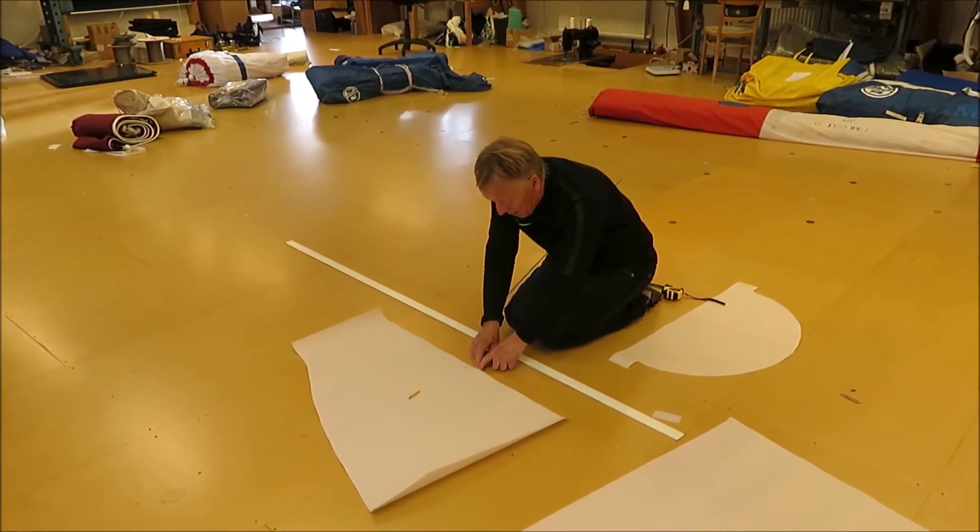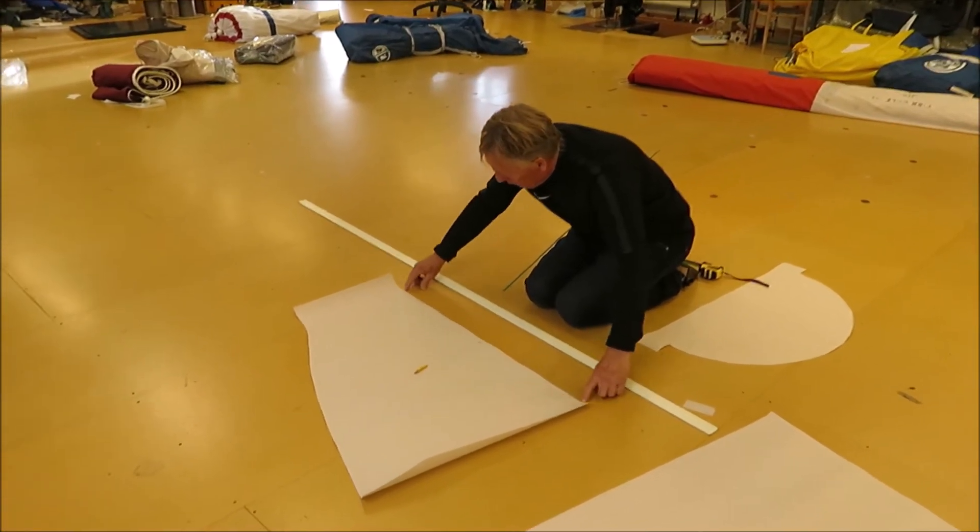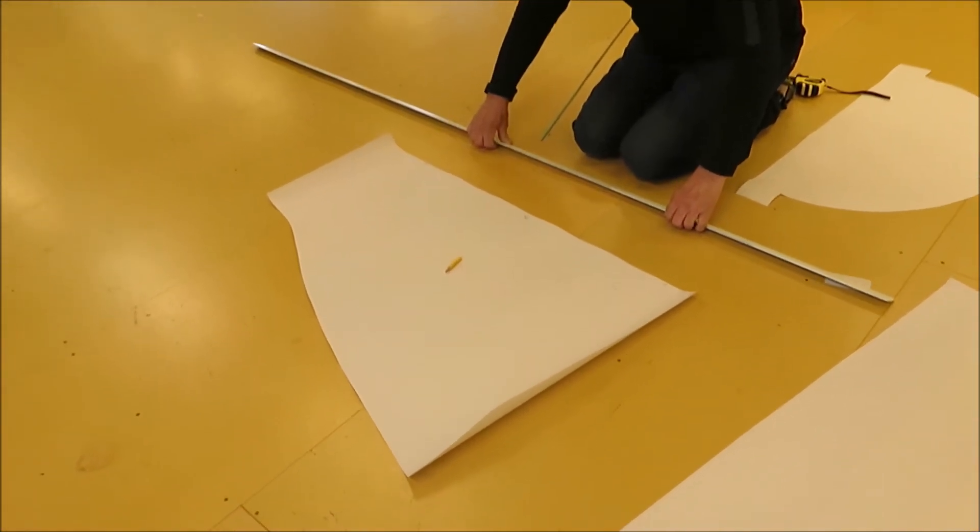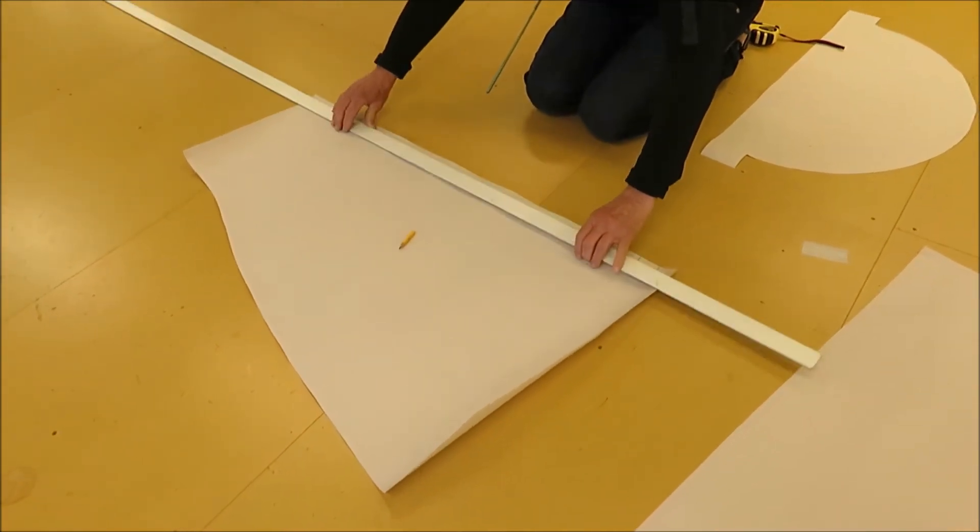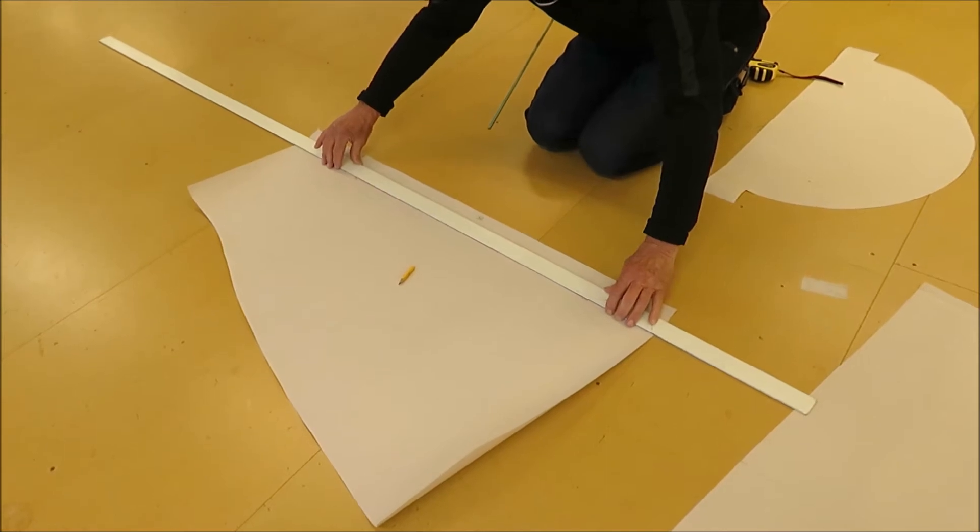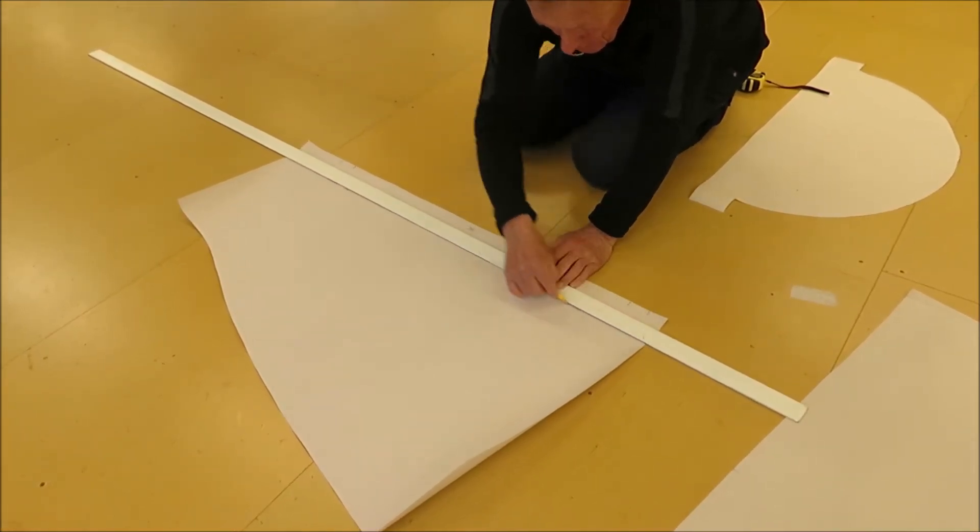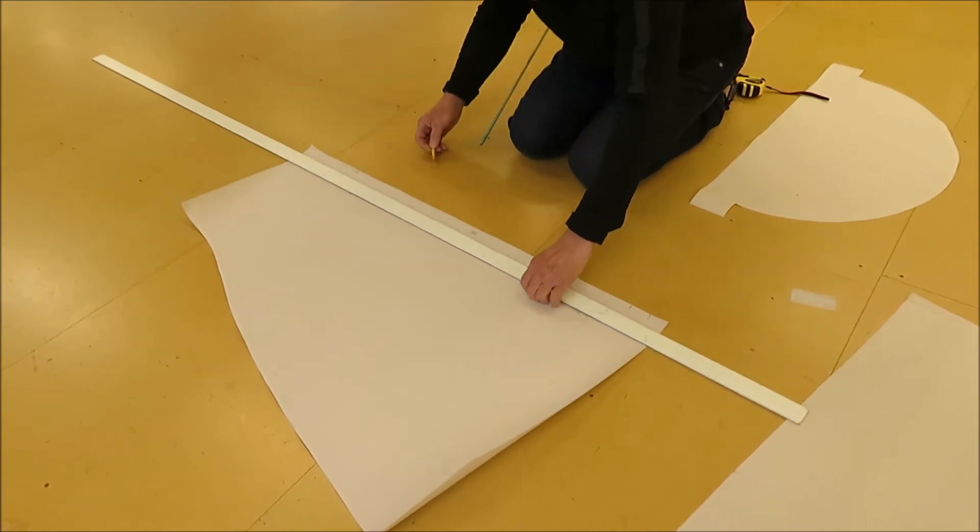This is the woven edge of the fabric. Take a ruler and draw a line to mark a hem. It's 8 centimeters.